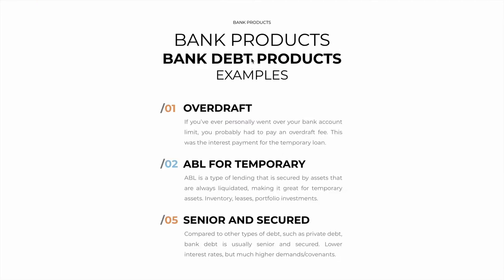What are some examples of bank debt products? The first are overdraft facilities — available for individuals as well. If you've ever personally gone over your bank account limit, you probably had to pay an overdraft fee — that was the interest payment for that temporary loan. Usually, when an overdraft is not negotiated beforehand, you are charged a lot more than usual. So if you've already agreed with the bank that you can go over that limit and pay 5%, that's what happens. But if you haven't negotiated and you go over the limit, you may pay 20% or more of that amount. It's kind of an unpredictable loan.